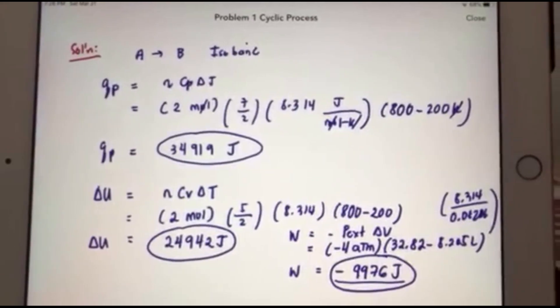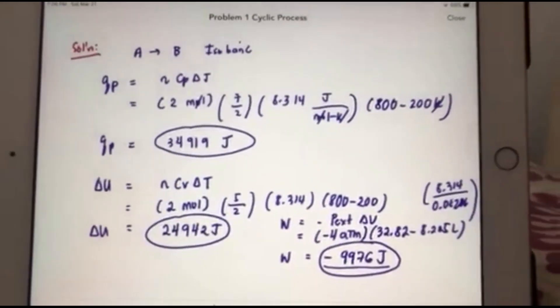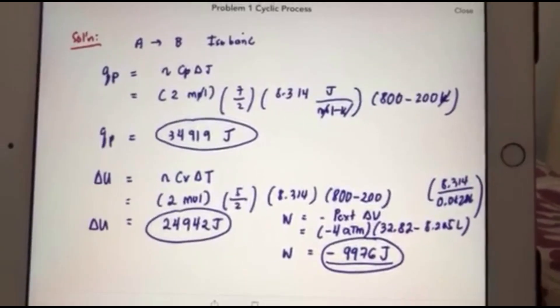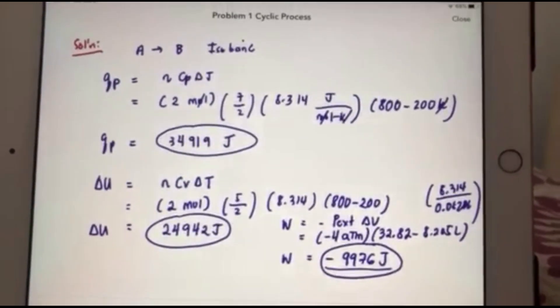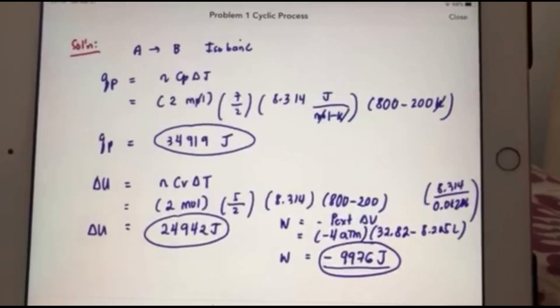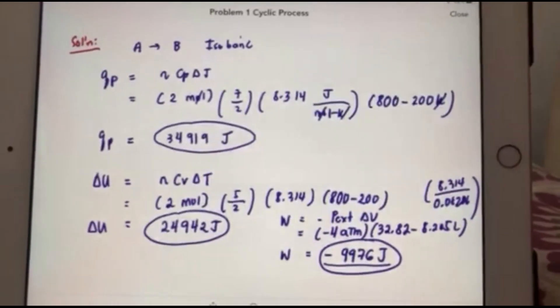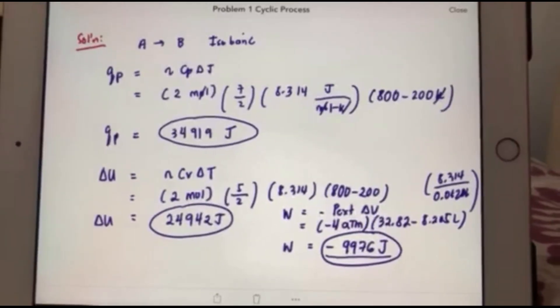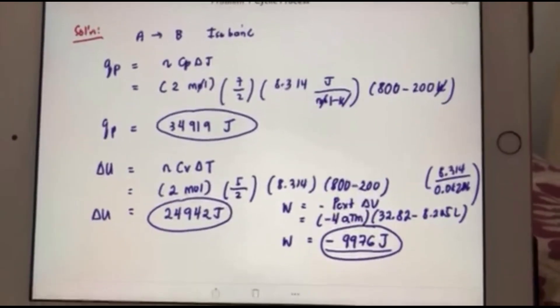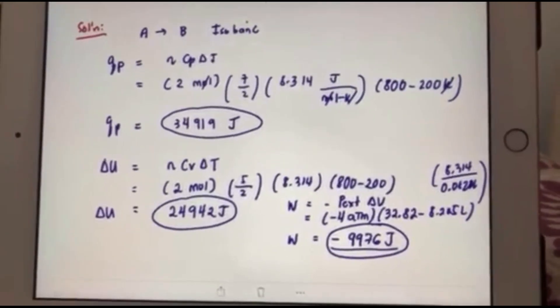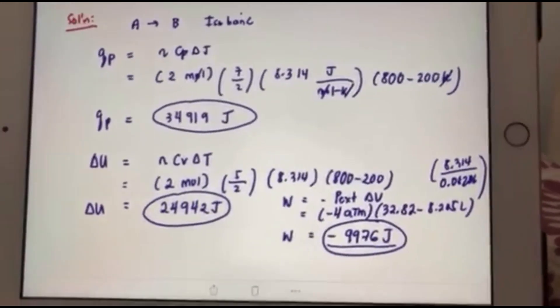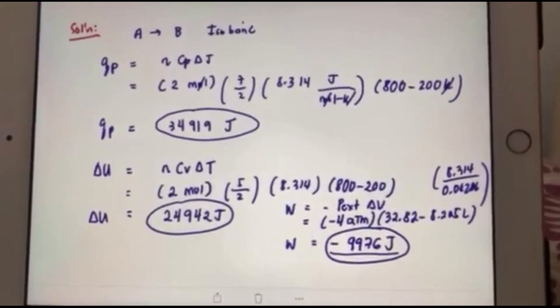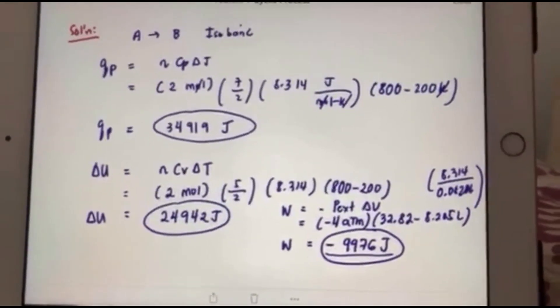Okay, for step a to b, it's an isobaric process. So we know that for isobaric, q at constant pressure is equal to nCp delta t. Keep in mind that for diatomic gas, Cp is equal to 7 halves R, and Cv is equal to 5 halves R. Substituting 2 times 7 halves R times delta t, qp is equal to 34,919 joules.